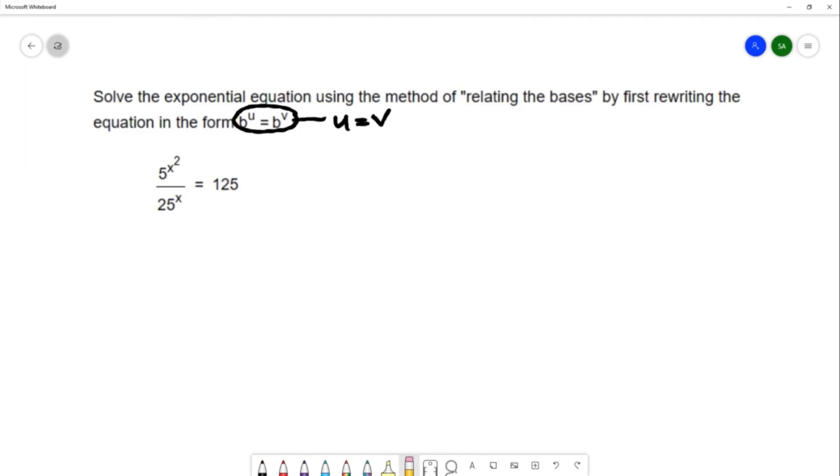The equation we'd like to use this property on is 5 to the x squared over 25 to the x equals 125.